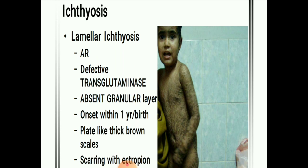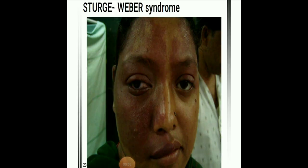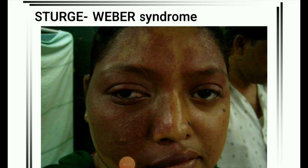Next image: Lamellar ichthyosis — autosomal recessive disease, defective gene transglutaminase-1, absent granular layer, onset within the first year or at birth. Shows plate-like thick brown scales with scarring, ectropion. Next image: Tuberous sclerosis complex. Next image: Sturge-Weber syndrome. I hope you will remember these images — thank you.